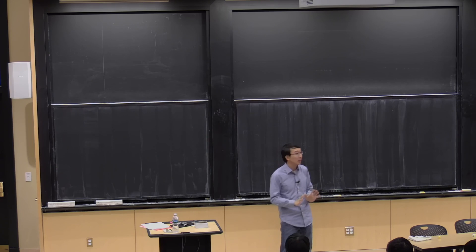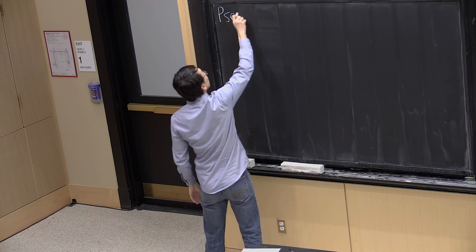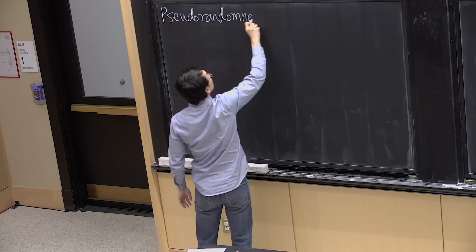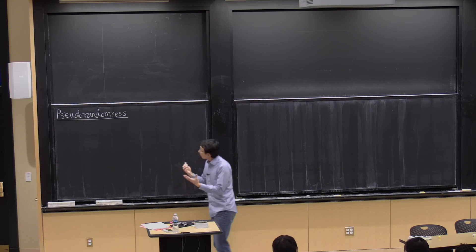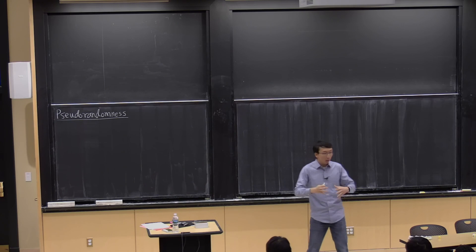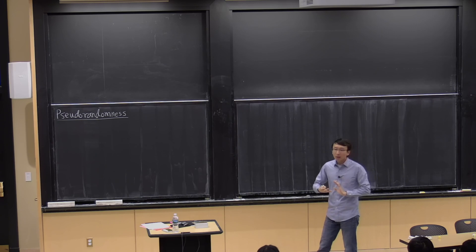So what does random-like mean? That's something I want to discuss for the next couple of lectures. This is the idea of pseudo-randomness, which is a concept really prevalent in combinatorics, in theoretical computer science, and in many different areas. What pseudo-randomness tries to capture is: in what ways can a non-random object look random?